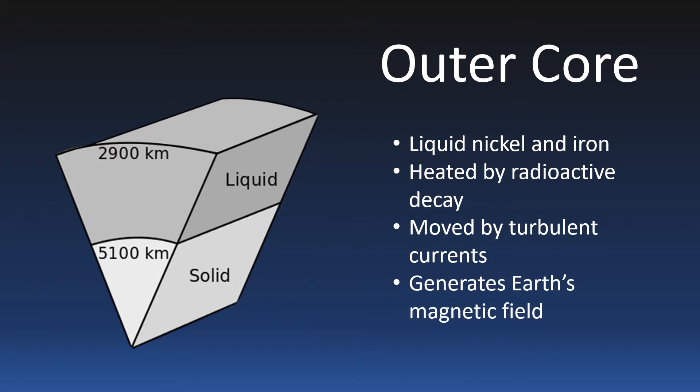Heated largely by radioactive decay of the elements uranium and thorium, this liquid churns in huge turbulent currents. This motion generates electrical currents which, in turn, generate the Earth's magnetic field. And for some reason yet unknown to science, the Earth's magnetic field reverses roughly every 200,000 to 300,000 years.